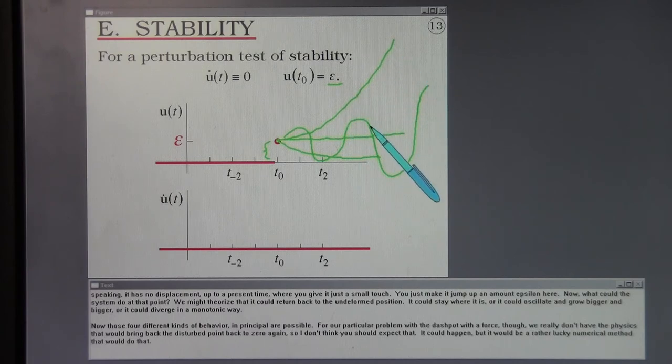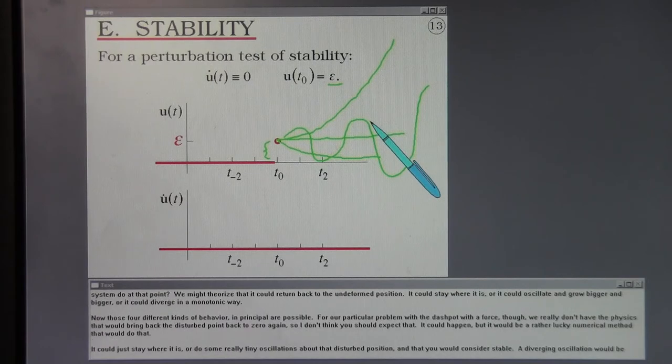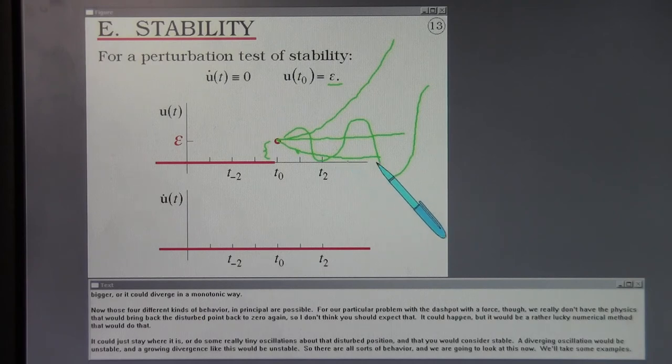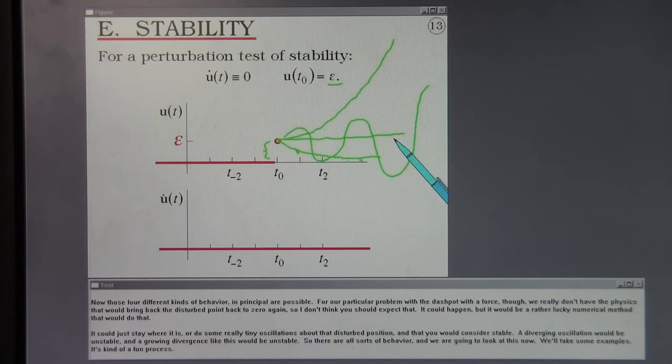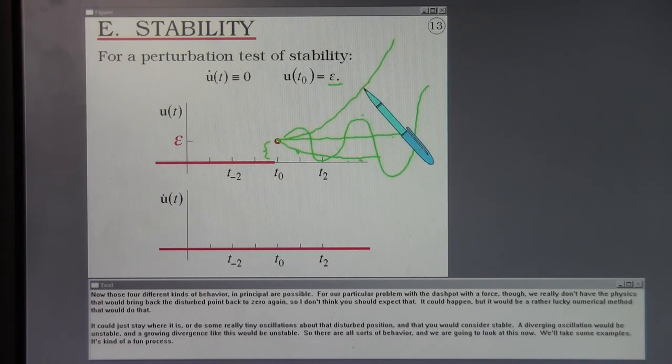We might theorize that it could return back to the undeformed position, it could stay where it is, or it could oscillate and grow bigger and bigger, or it could diverge in a monotonic way. Now, those four different kinds of behavior in principle are possible. For our particular problem of a dashpot with a force, we really don't have the physics that would bring back the disturbed point back to zero again. It could just stay where it is or do some really tiny oscillations about that disturbed position and that you would consider stable. A diverging oscillation would be unstable and a growing divergence like this would be unstable.